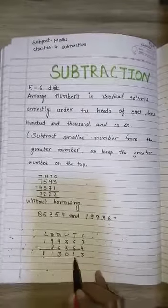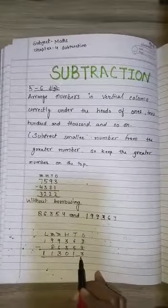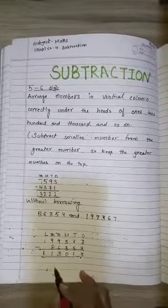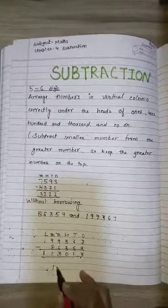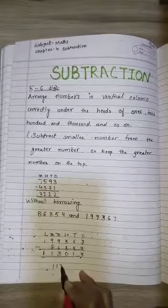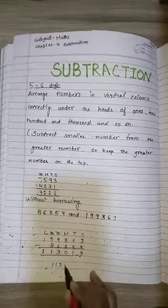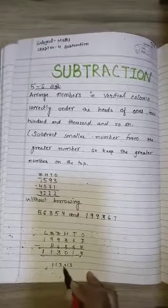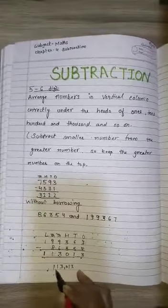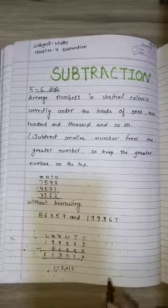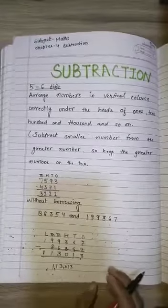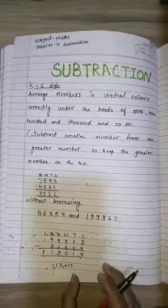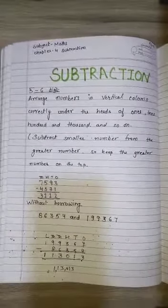So the answer is one lakh thirteen thousand thirteen. We have to put the comma here and here according to the places. Okay.